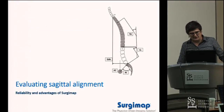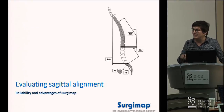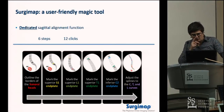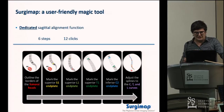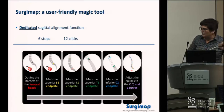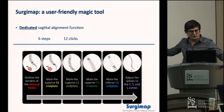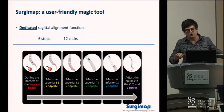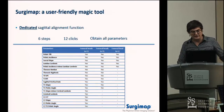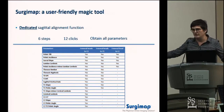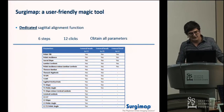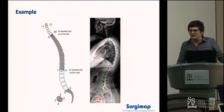Sagittal plane measurement can appear complex, sometimes even academic — but with SurgiMap you can follow an animation guide. You identify the femoral head, sacrum, L1, and T1. If you want to include the cervical spine, you also click on C2. Based on those few landmarks, all the parameters described in the literature — or at least the most common ones — are automatically displayed.